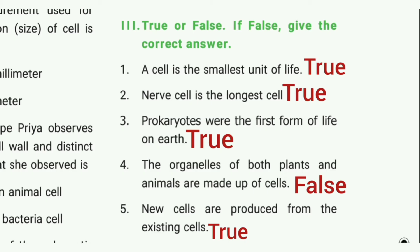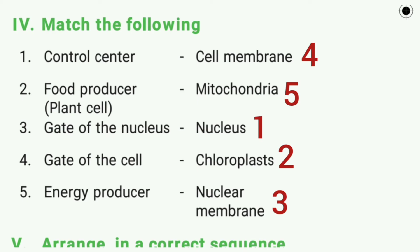Fourth one: the organelles of both plants and animals are made up of cells. The answer is false. Fifth one: new cells are produced from the existing cell. The answer is true.